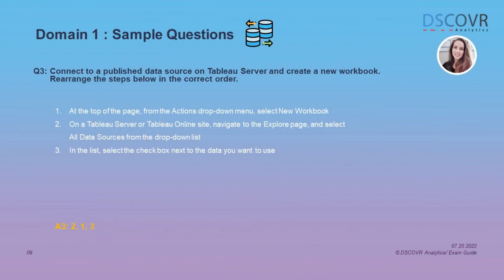You may also see questions that ask you to reorder steps in the correct order. For example, if we wanted to connect to a published data source on Tableau Server and create a new workbook, what would be the correct order for the steps? Make sure you know the steps you would take to publish a data source online, connect to a published data source, or navigate to a specific project folder.